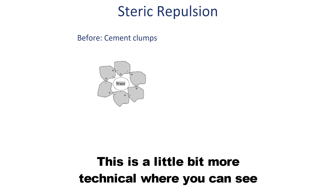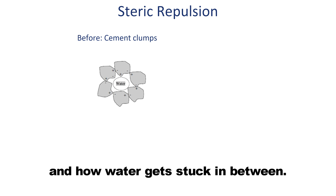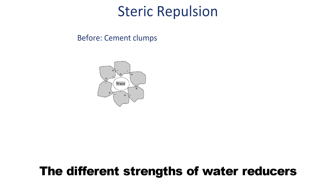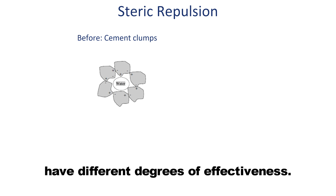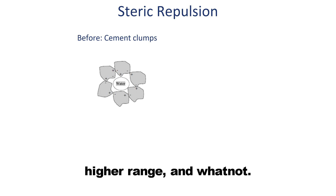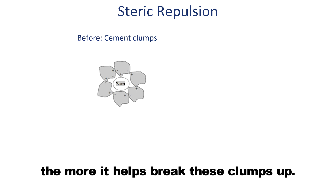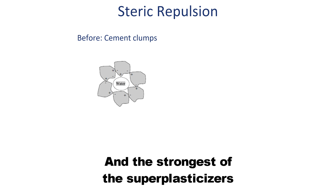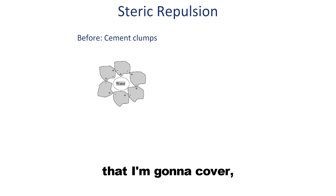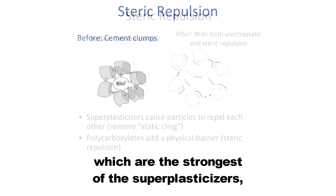This is a little bit more technical, where you can see the positive and negative charges of the particles and how water gets stuck in between. The different strengths of water reducers have different degrees of effectiveness — low-range, mid-range, high-range, and so on. The stronger the water reducer, the more it helps break these clumps up. And the strongest of the water reducers are the strongest of the superplasticizers.